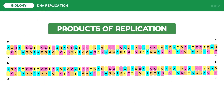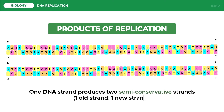Replication has now made two identical DNA strands. The replication process is called semi-conservative because it retains the old or parent strand and makes use of the new daughter strand. Let us now review the following key points.